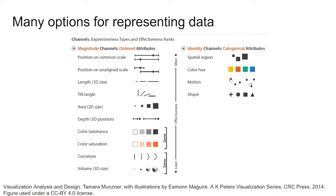This table ranks the effectiveness of ordered and categorical attributes. For ordered attributes such as size, temperature, and time, position on a common scale is the most effective, such as the height of bars on a bar graph or location of a point in a scatter plot in relation to the axes.